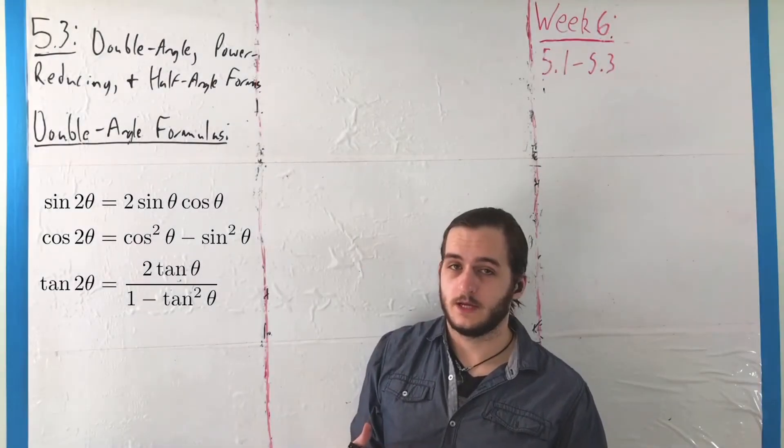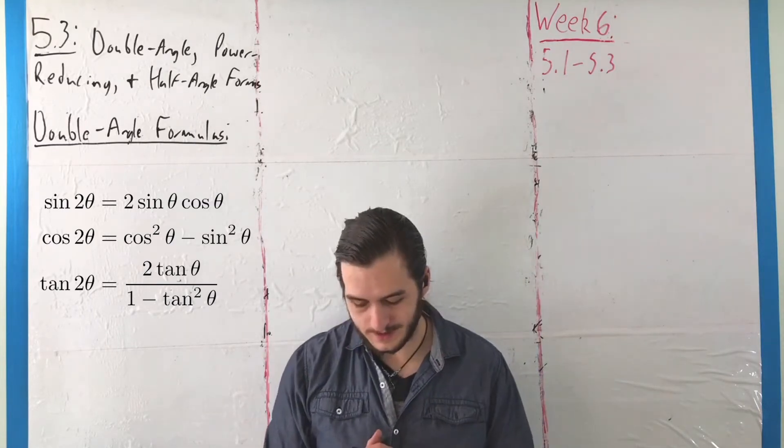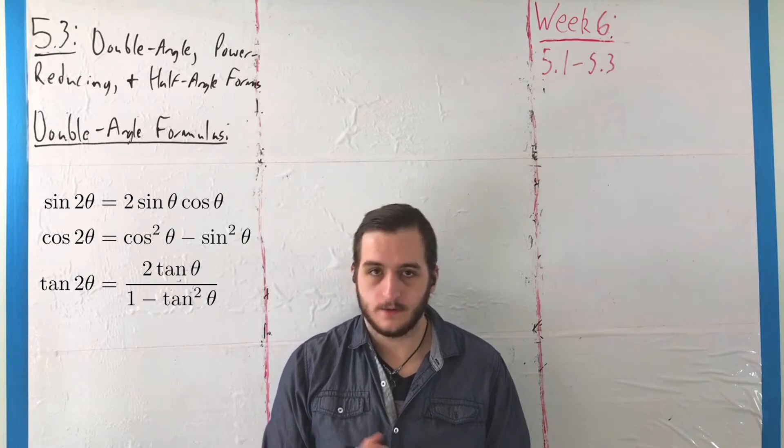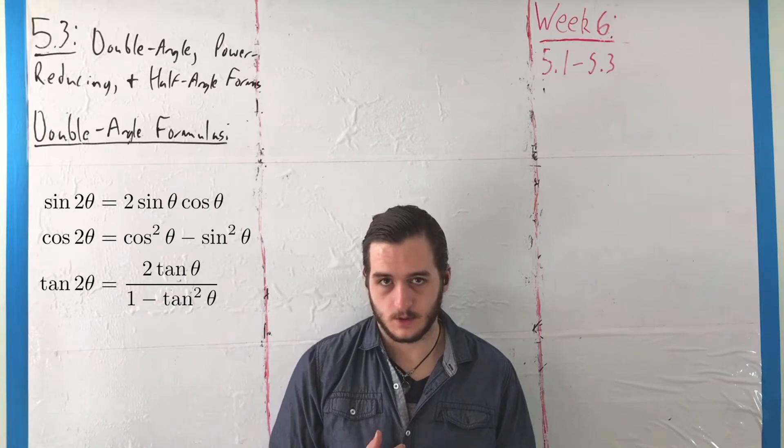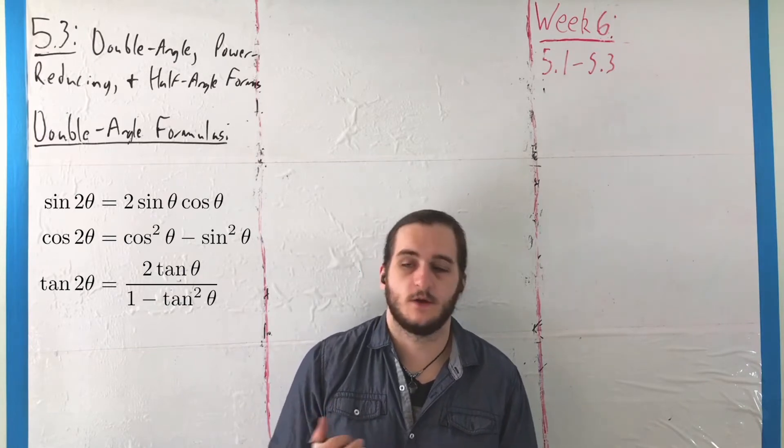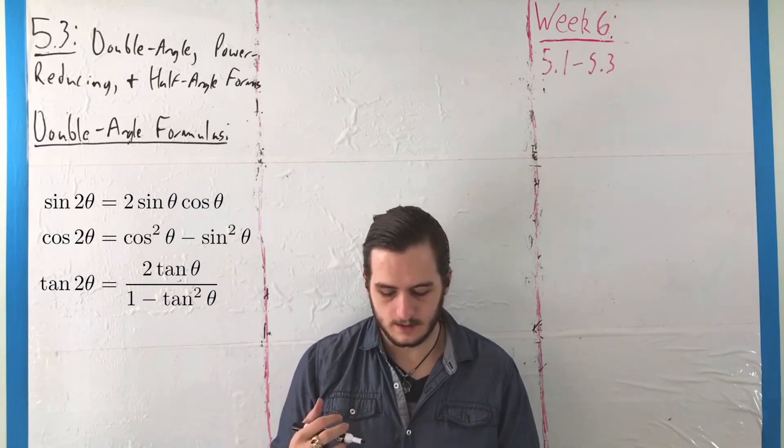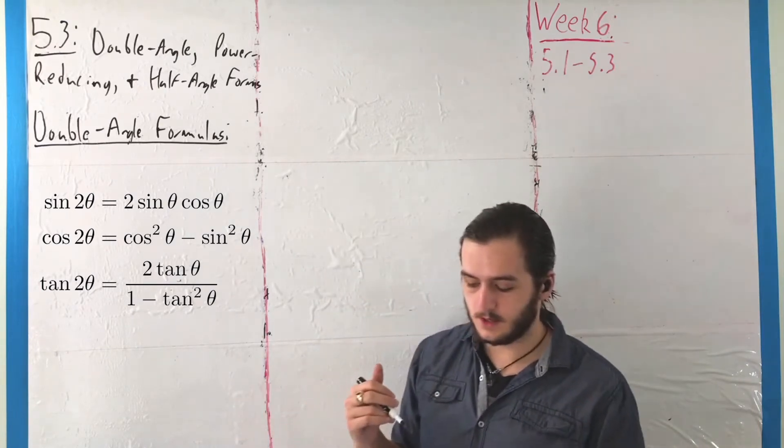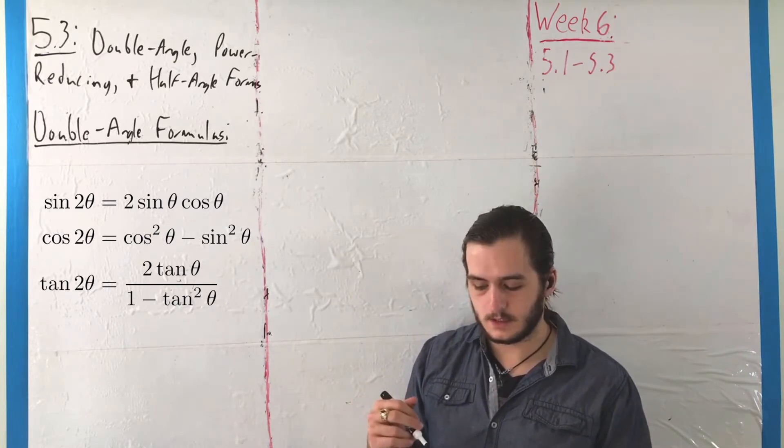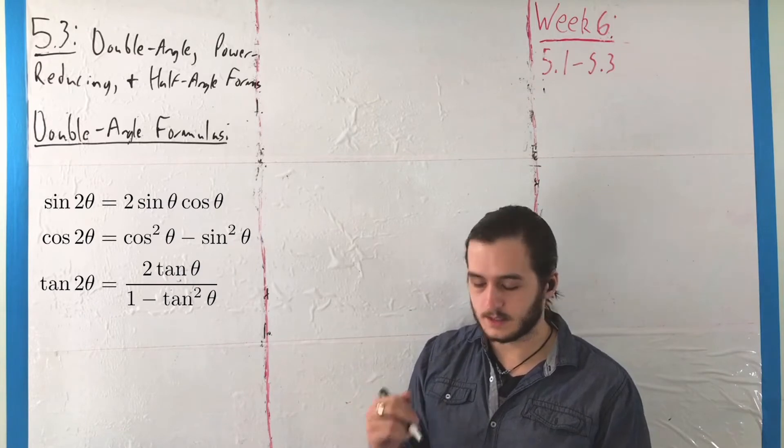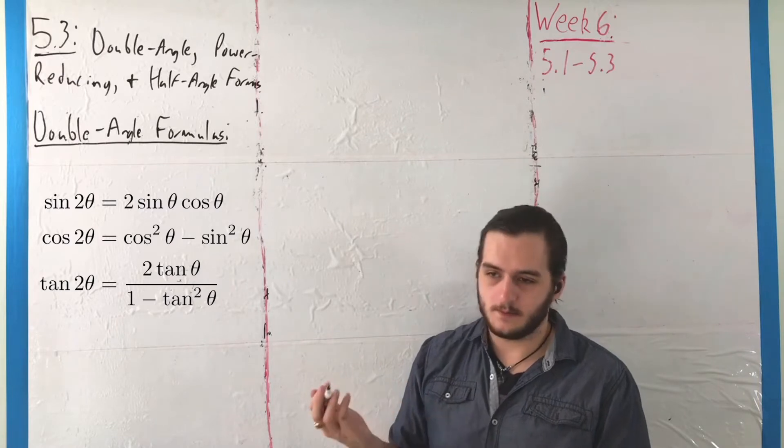Continuing onward, the first thing we'll look at from this section is the set of double angle formulas. These can be thought of as applications of the sum of angles formulas, in the specific context of alpha equaling beta to get the same angle. We have sine of 2θ equals 2 sine θ cosine θ, cosine of 2θ equals cosine squared θ minus sine squared θ, and tangent of 2θ equals 2 tangent θ over 1 minus tangent squared θ.